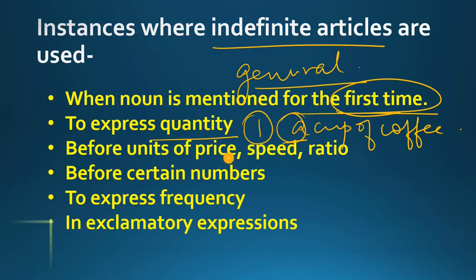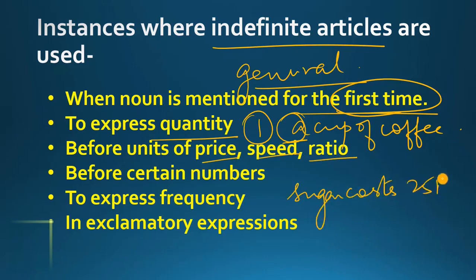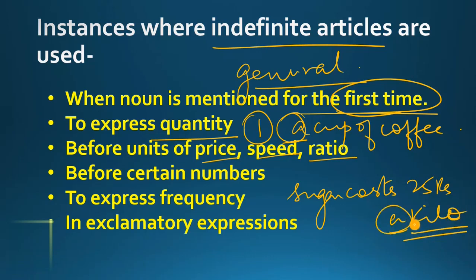It is also used before units of price, speed, and ratio. For example, 'sugar costs 25 rupees a kilo' — यहाँ पर 'kilo' unit of weight है, और उससे पहले हमने 'a' use किया, which is an indefinite article. So indefinite article is used before the unit of price, speed, ratio, weight, etc.